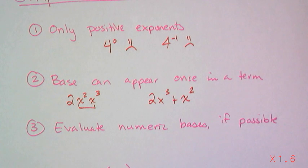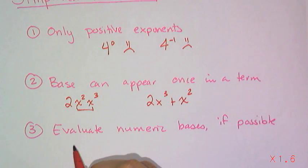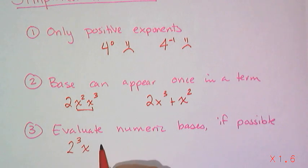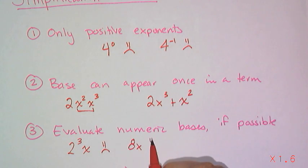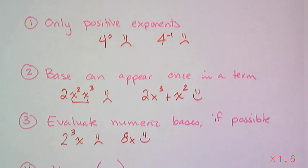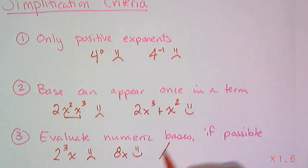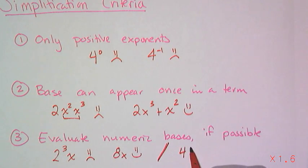Now you evaluate numeric bases if possible. So for example if I say 2 cubed x that is a big frowny face. Because I know what 2 cubed is. That's 8. This would be happy face. And sometimes it's not possible. So for example if I have 4 to the x power. I don't know what x is. I can't evaluate that.